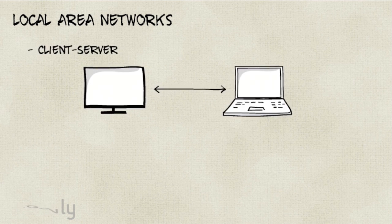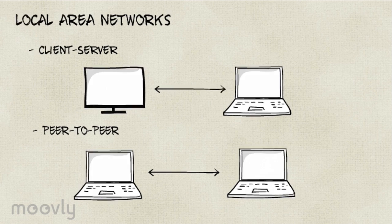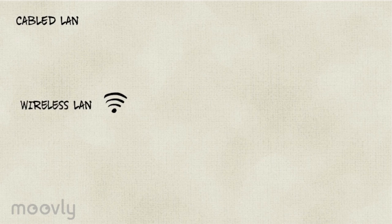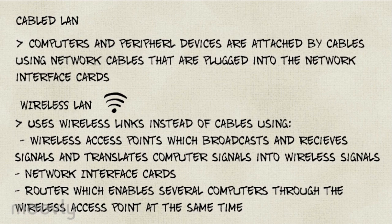There are two types of LANs: client-server and peer-to-peer. Client-server has designated servers to cater to clients, whereas peer-to-peer uses direct communication between computers. LANs can be set up in two ways: cabled and wireless. Pause now for detailed information on how each of them work.